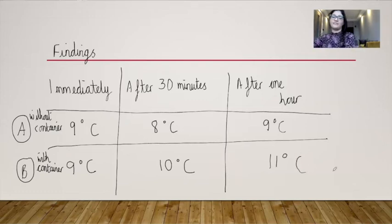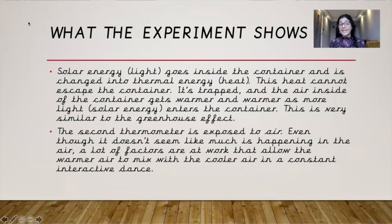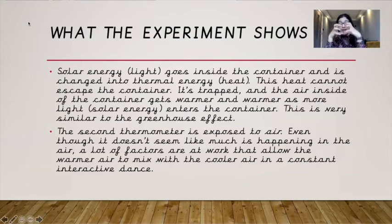What pattern can you see here? What this experiment should show you is that solar energy, also known as light energy from the sun, goes inside the container and is changed into thermal energy or heat energy. The heat cannot escape the container — it's trapped inside, and the air inside gets warmer and warmer as more light enters the container. This is very similar to the greenhouse effect. The thermometer with the container on top should show you what the greenhouse effect means — the heat is trapped inside, it can't escape, so it gets hotter and hotter. So that shows in the thermometer's reading — the thermometer shows a hotter reading.